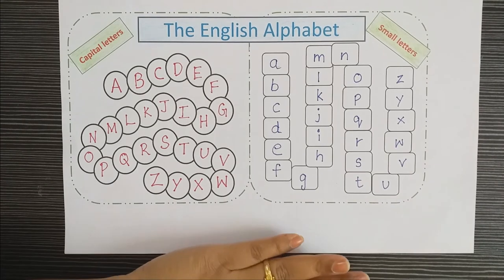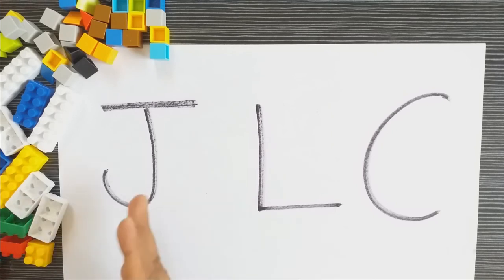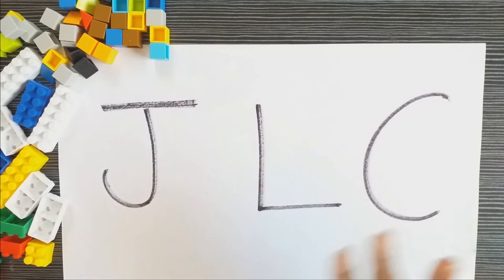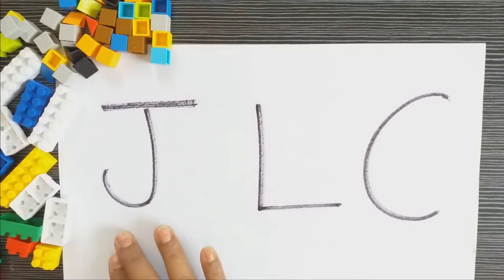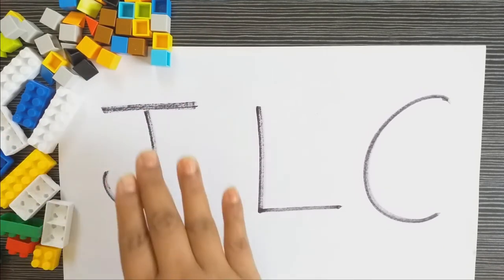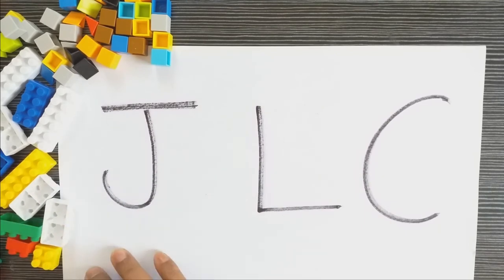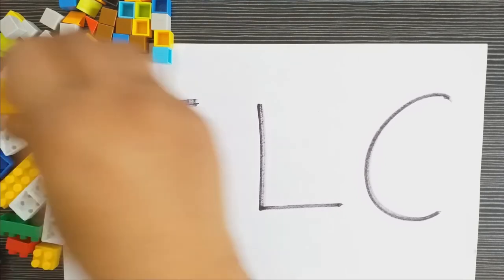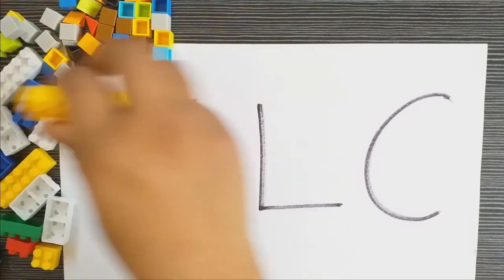There's a small activity that you can do. Moving on to our first DIY activity — I have an A4 sheet where I have written three letters: J, L, and C. I have two different types of Lego blocks. You can ask the children to trace these letters. The first letter is J, so I'm going to take this Lego block and trace it.